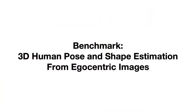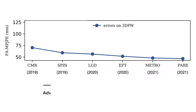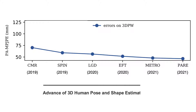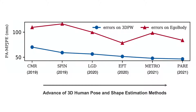We leverage EgoBody to introduce the first benchmark for 3D human pose and shape estimation from egocentric view images. The performance of state-of-the-art 3D human pose and shape estimation methods has started to saturate on existing major datasets with third-person view images, such as 3DPW. However, most of them show a significant accuracy drop to different extents when tested on our dataset.